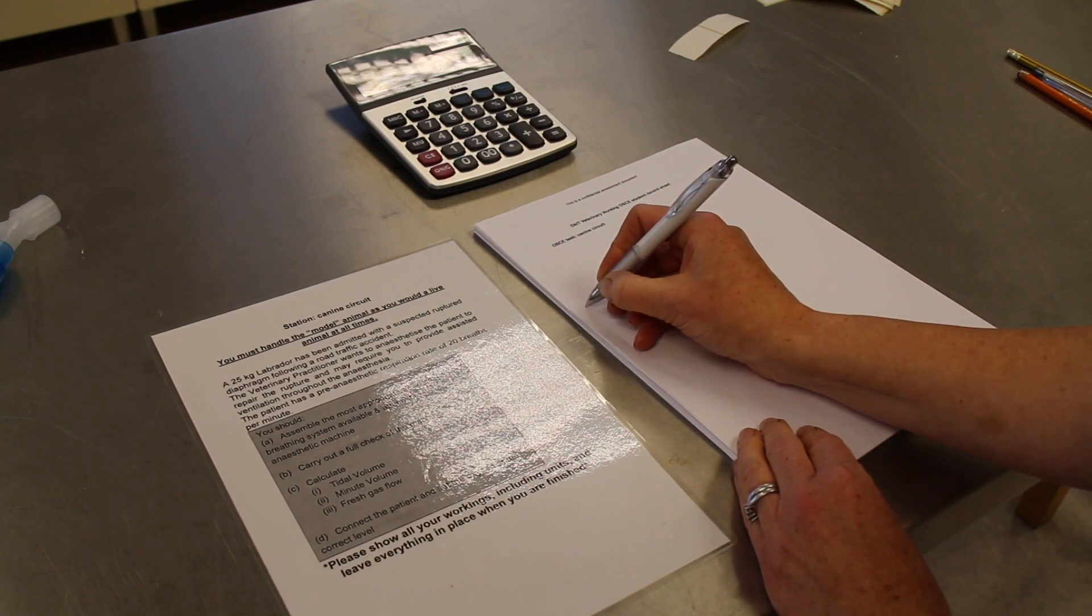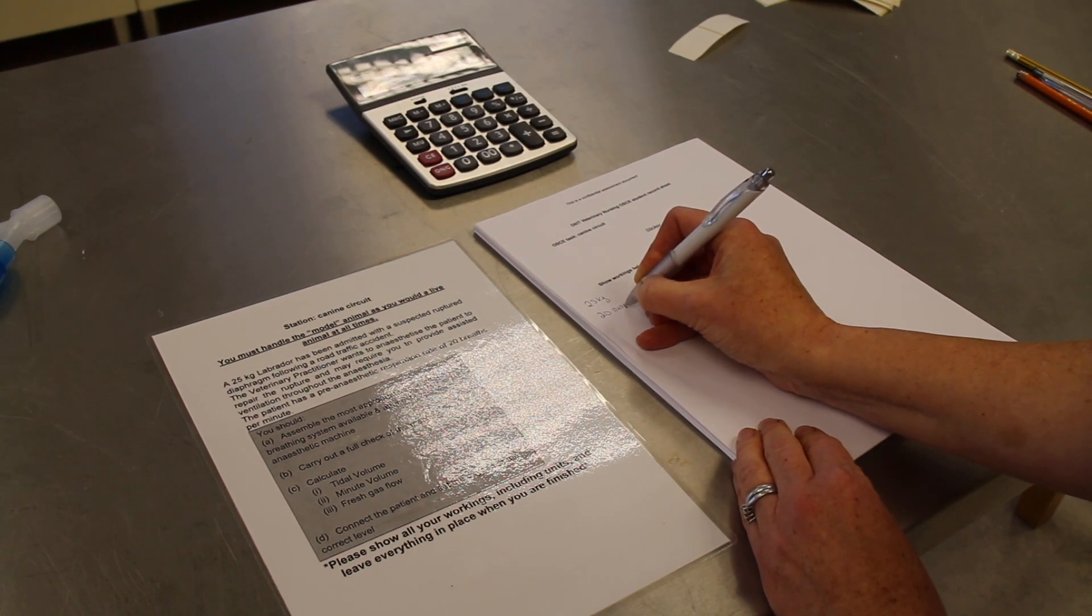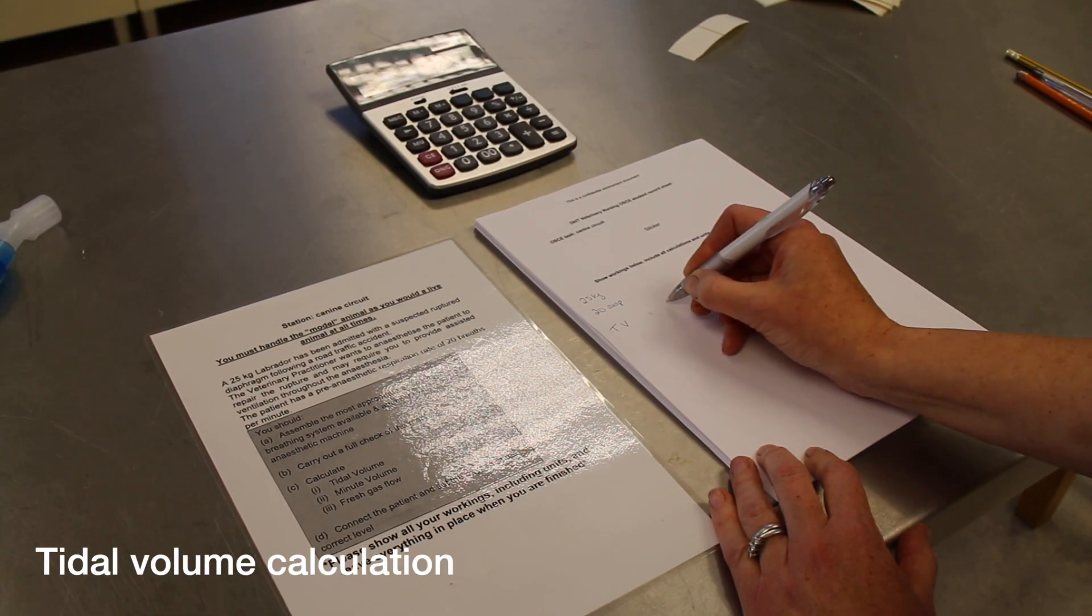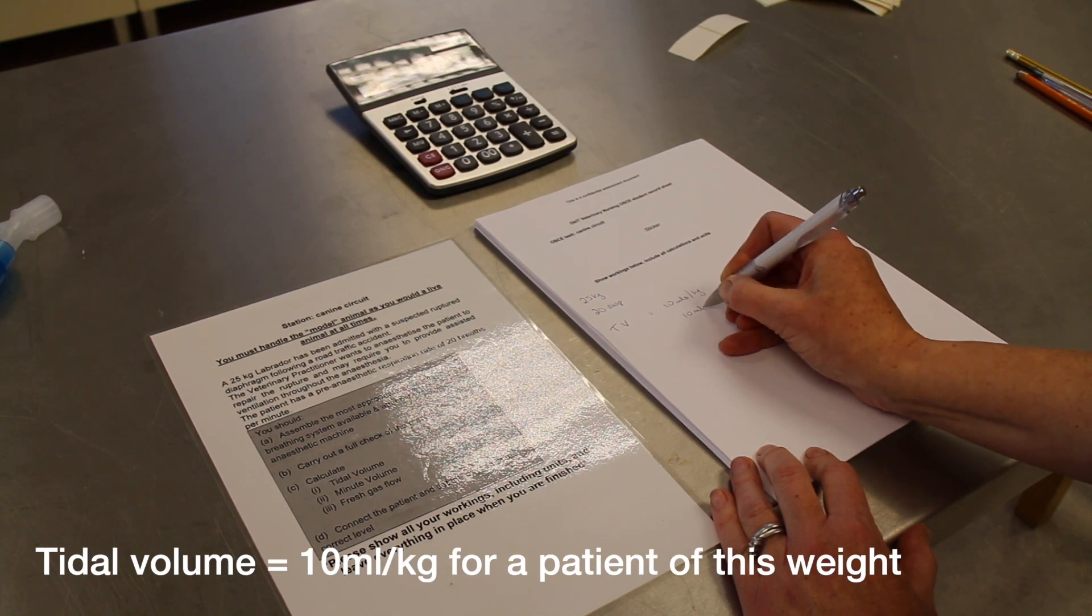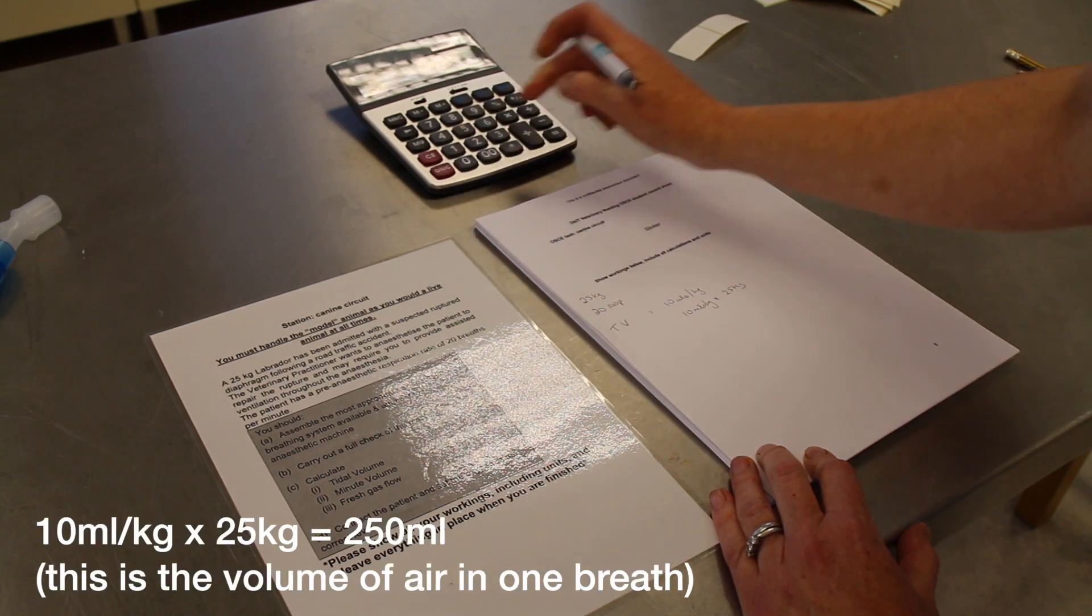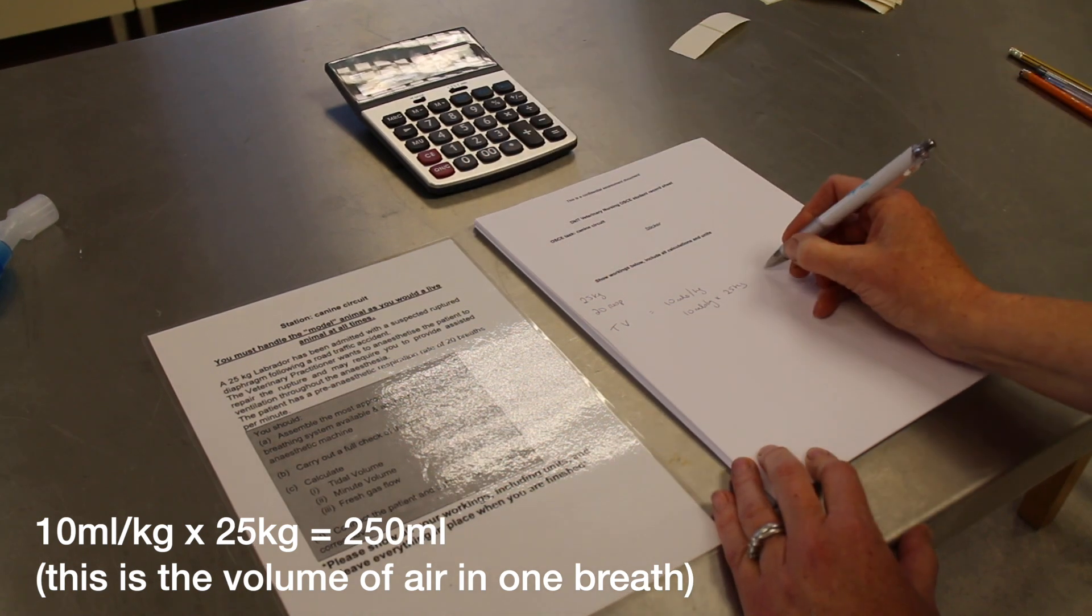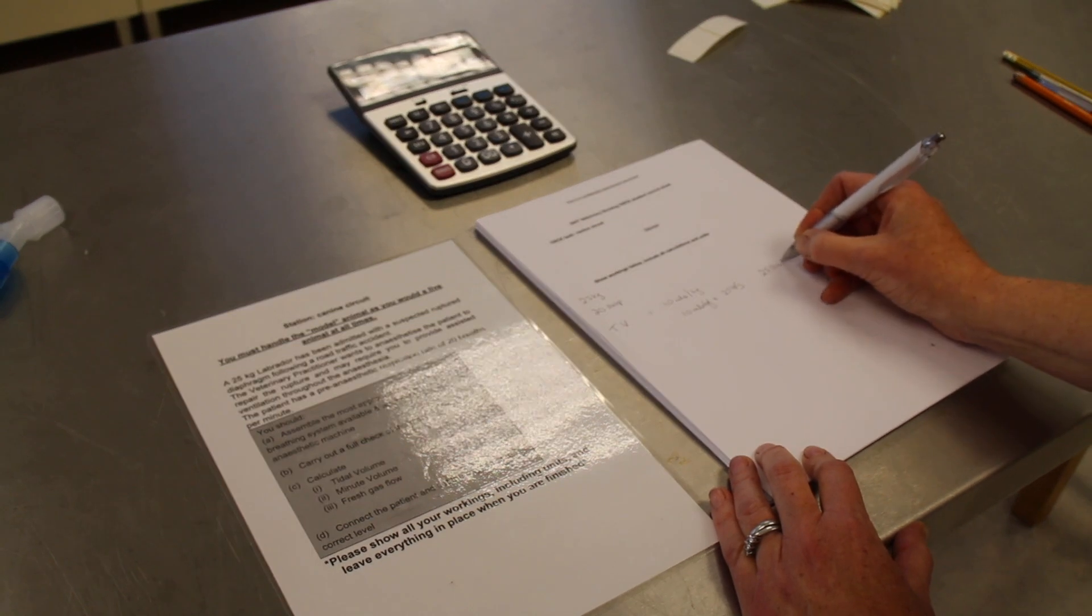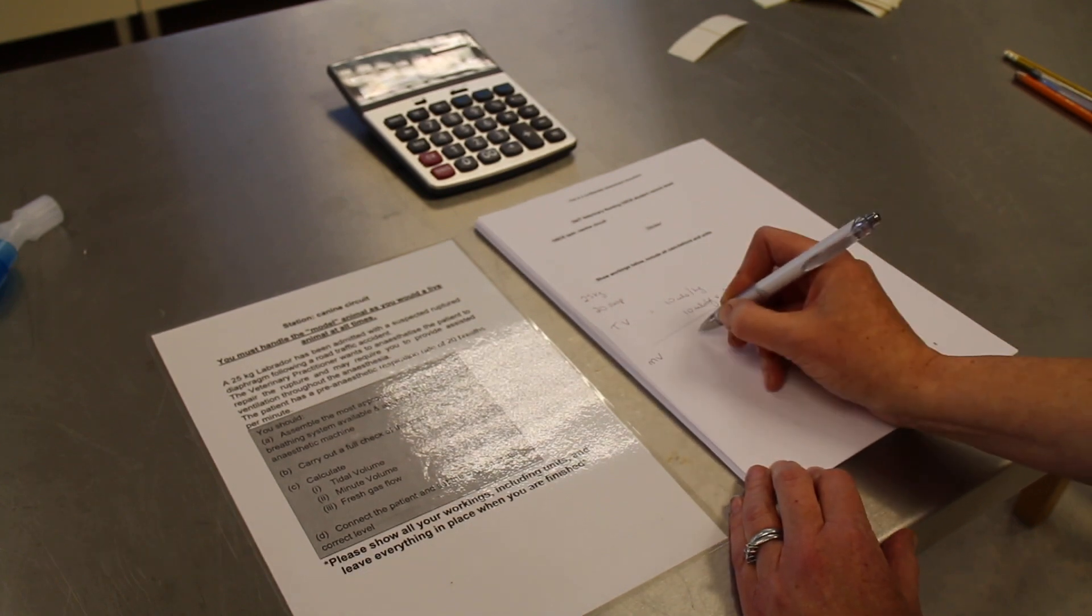First, I write down 25 kilograms and 20 breaths. Our first calculation is tidal volume, which is 10 mL per kilogram. So 10 mL multiplied by 25 kilograms equals 250 - kilograms cancels out, giving us 250 mL.